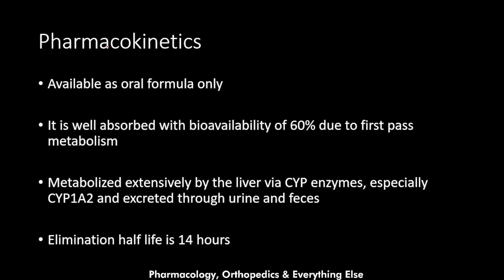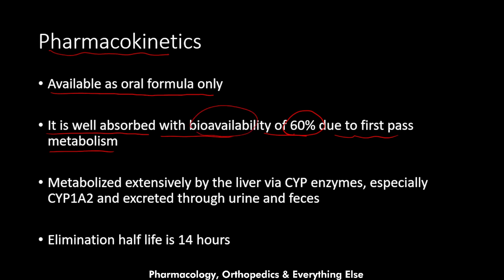Now let's talk about the pharmacokinetics of this medication. It is available as an oral formulation only, and it is well absorbed with a bioavailability of 60% due to first-pass metabolism. Once the drug is absorbed from the intestine, it goes into the portal vein and then into the liver, where the first-pass effect causes 40% of the drug to be lost, and 60% reaches systemic circulation.